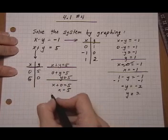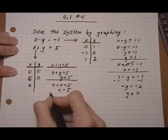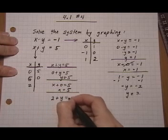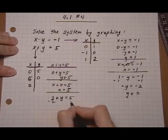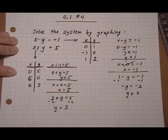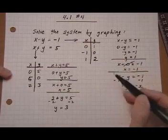And one extra point just to be safe, let's go ahead and put in x is, how about two? We can put in whatever we want. That gives us two plus y equals five. Taking away two on both sides, we get y equals three. So now for both equations, we have three ordered pairs. Let's go ahead and graph them.